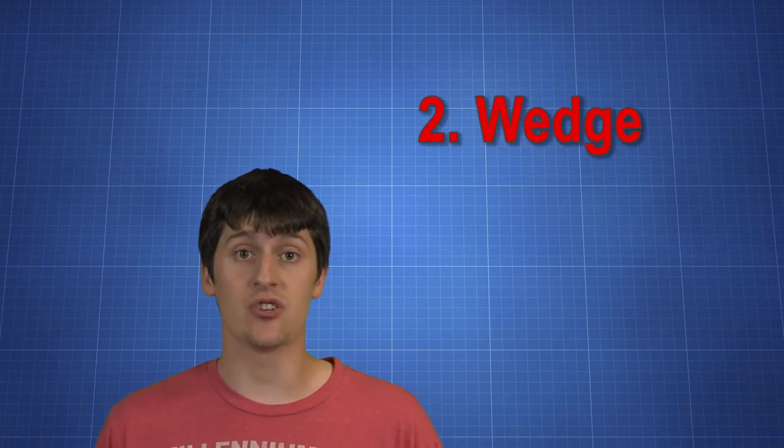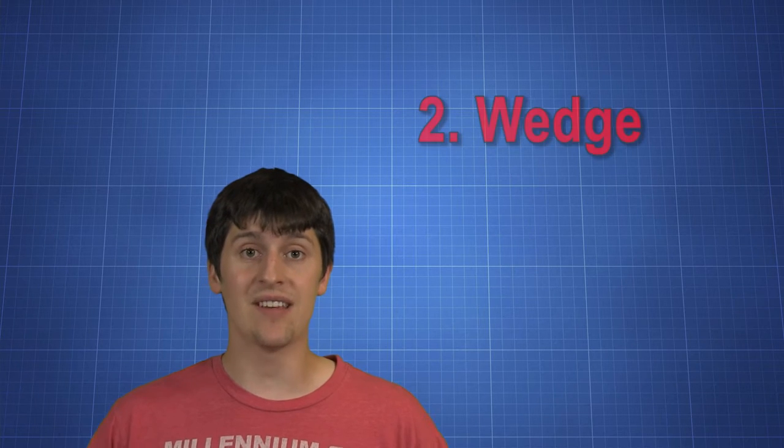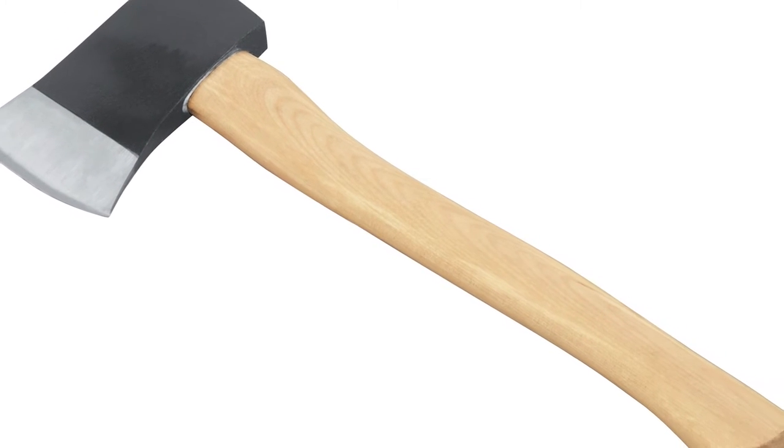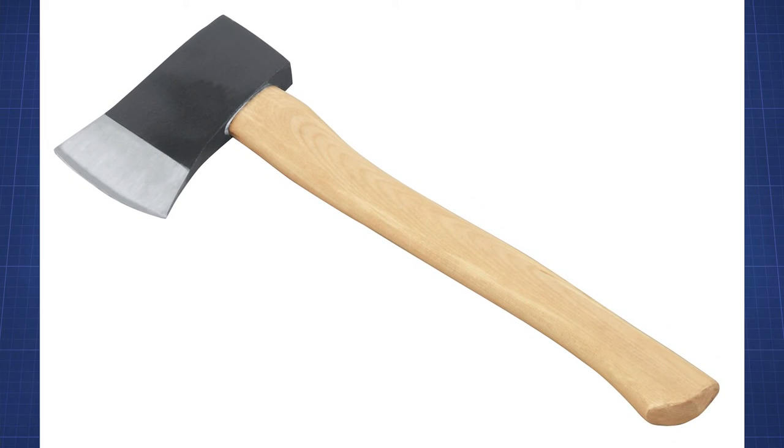A wedge is a triangle shaped object. It functions as a moving incline plane. You've seen wedges before. If you ever use an axe then you've used a wedge. Wedges are used to split things apart.